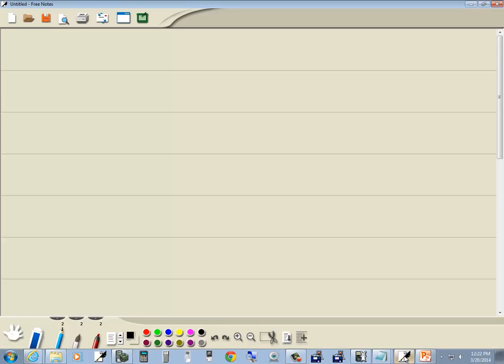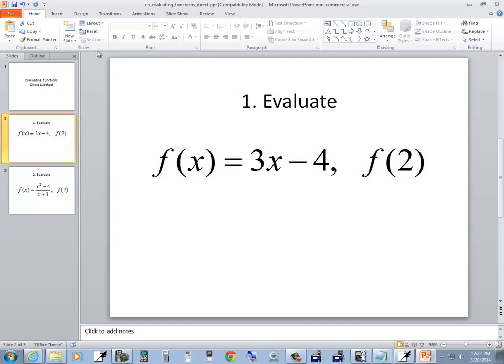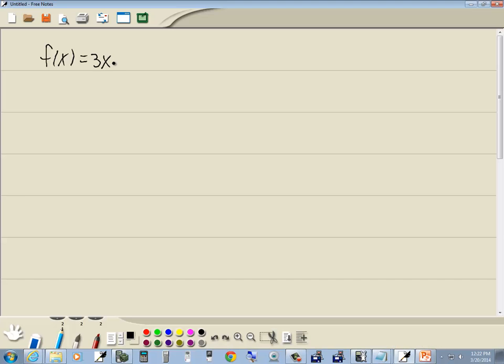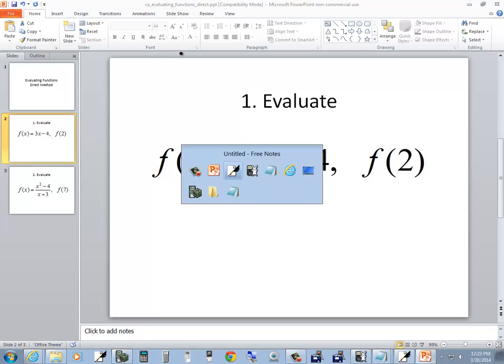We've got f of x is equal to 3x minus 4, and we want to find f of 2.